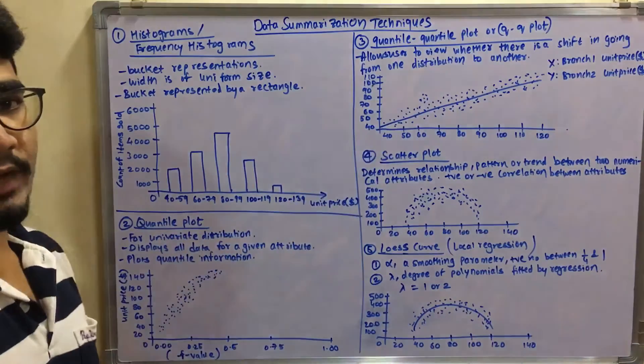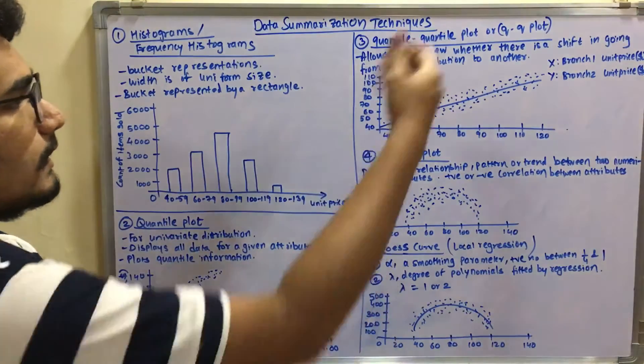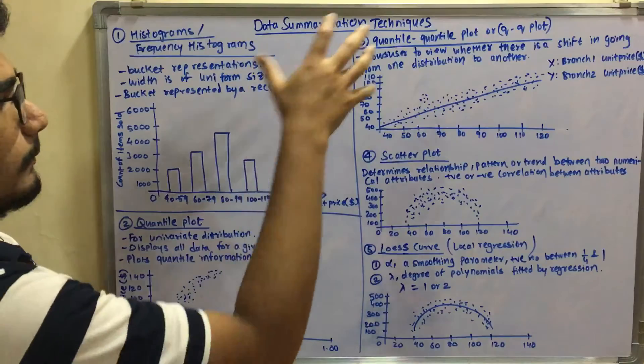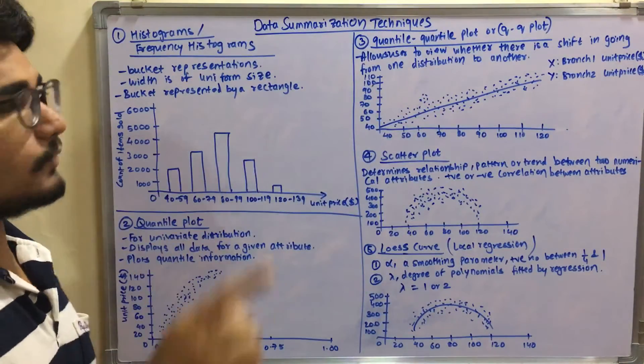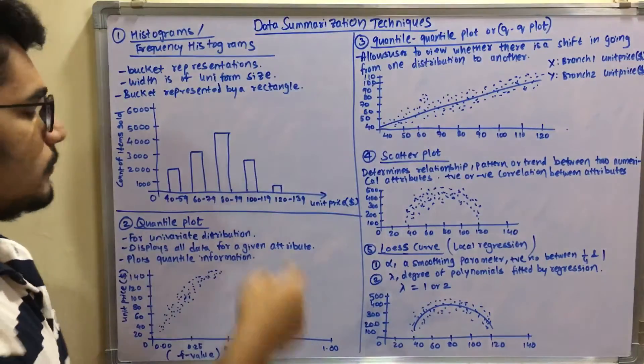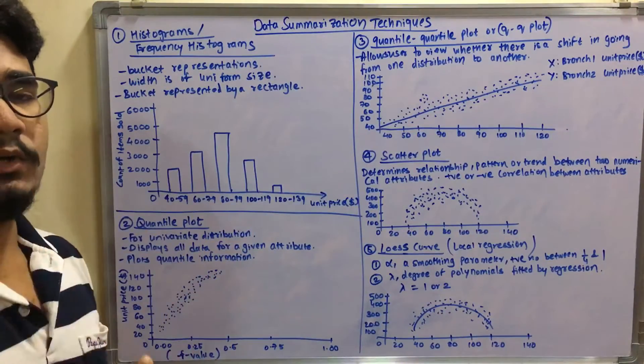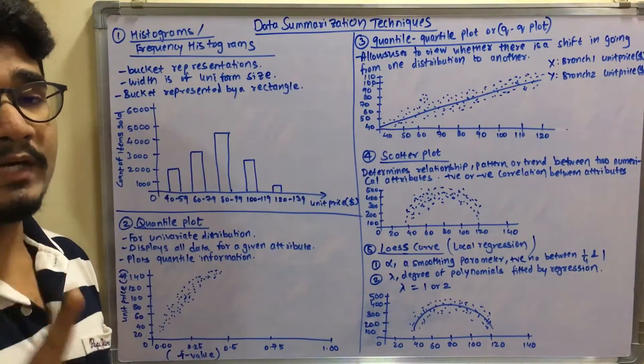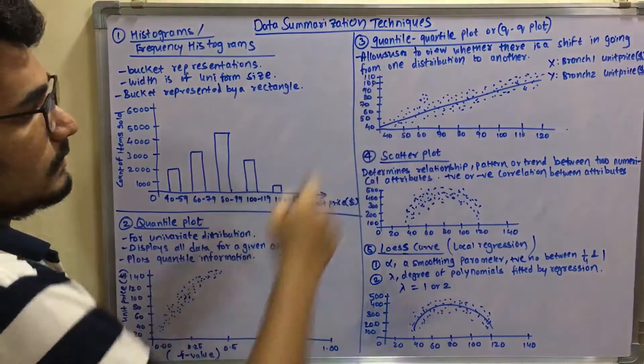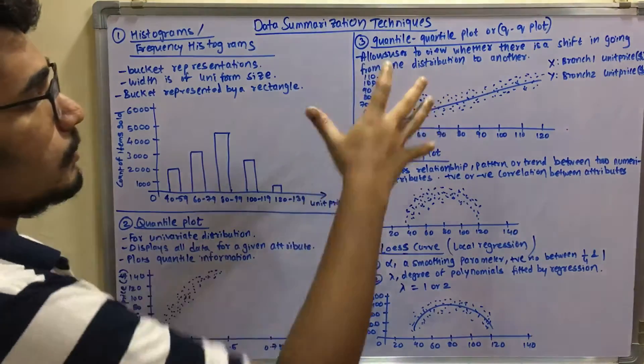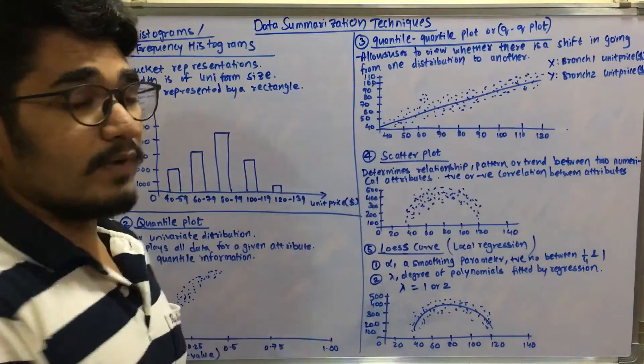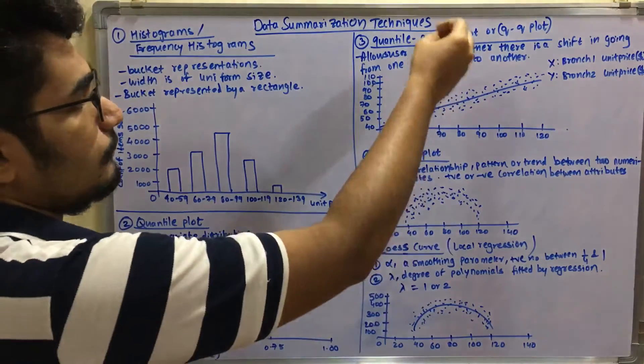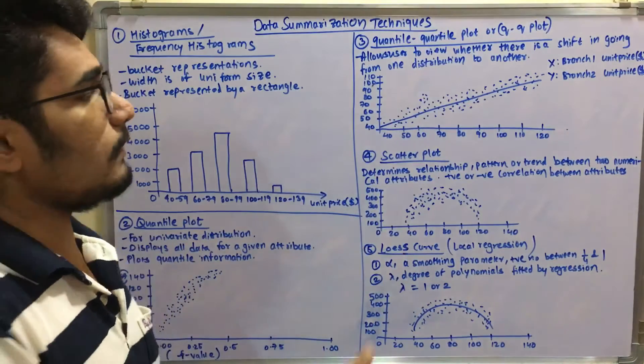Next, in contrary to this, we have the quantile-quantile plots, that is a QQ plot. So basically the difference between these two is like this is used for univariate distribution. This is also used for univariate distribution, but this is only used for denoting or depicting one particular or one single dataset.